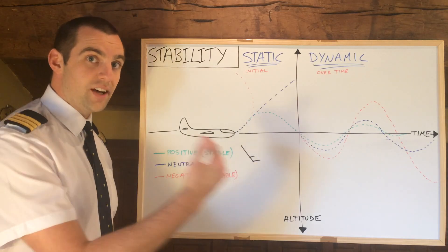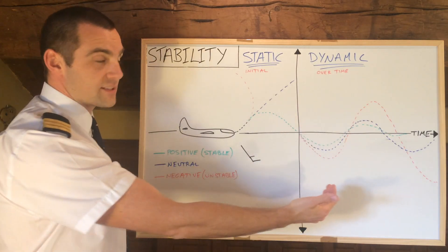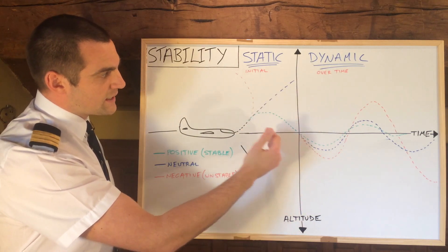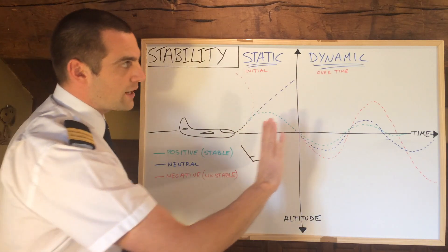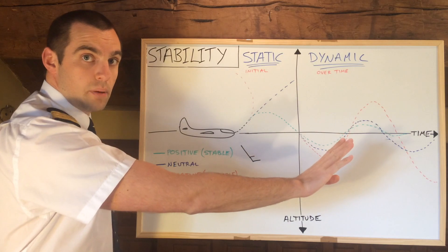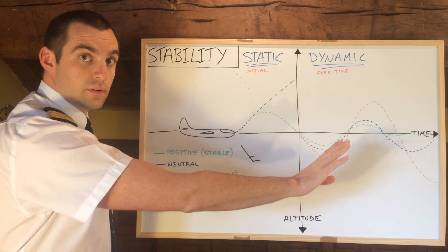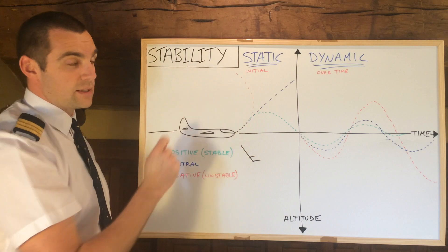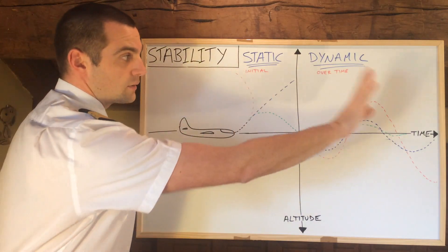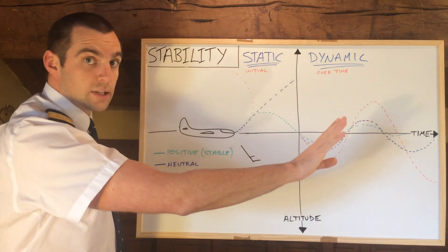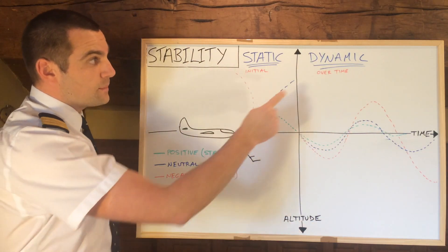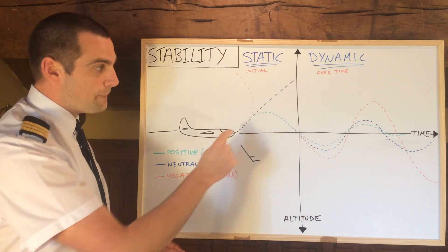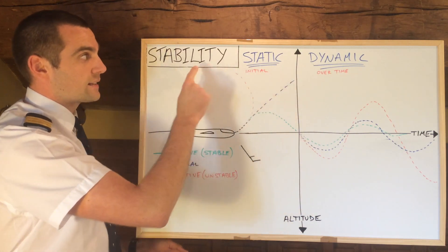After time is what we call dynamic stability. As you can see from the graph, there is only one line that progresses into the dynamic part of the graph, and that is the positive static stability line — all the others don't get there. So for an aircraft to be dynamically stable in any of the three states, it must be positively statically stable.